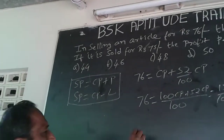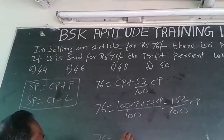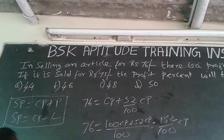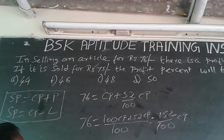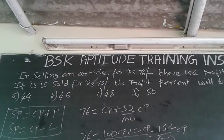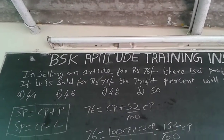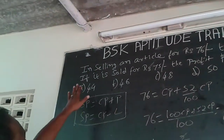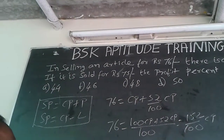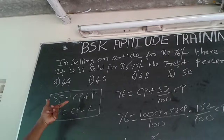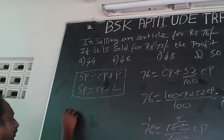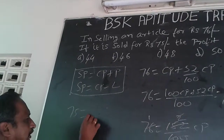Now solving: if 76 equals 152/100 of CP, we can cancel out. 76 divided by 2 is cancelled, giving CP equal to 50. Now that we know the cost price is 50, if the article is sold for Rs. 75, the formula remains the same: SP = CP + profit, so 75 = 50 + profit.